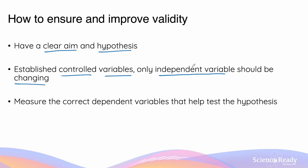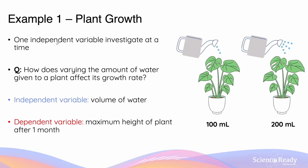Only your independent variable should be changing, and choosing the right independent variable is essential to ensure your experiment addresses the aim and tests the hypothesis. While the independent variable is being tested, you must measure the correct dependent variable. The dependent variable is the one that changes with the independent variable.